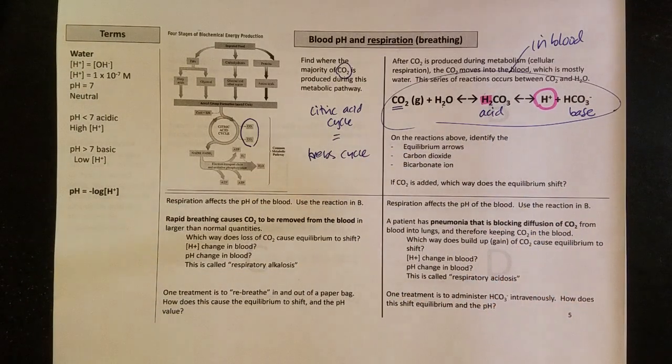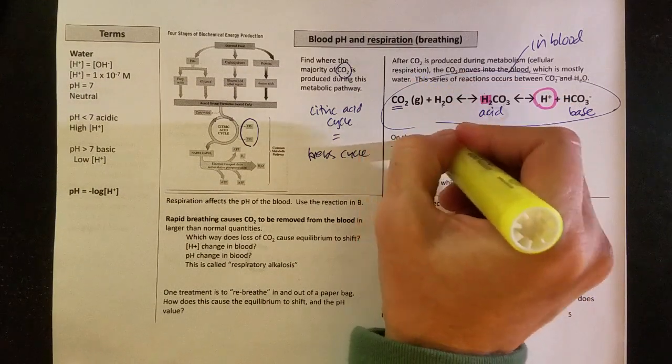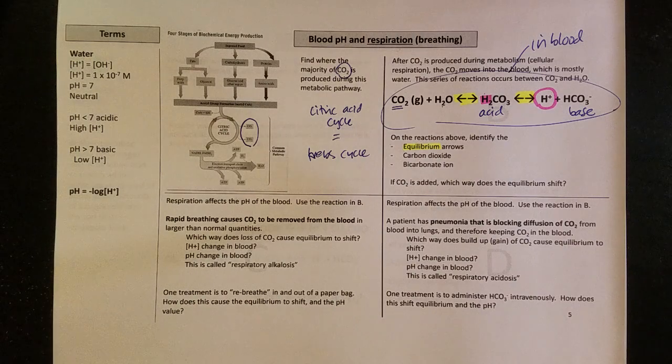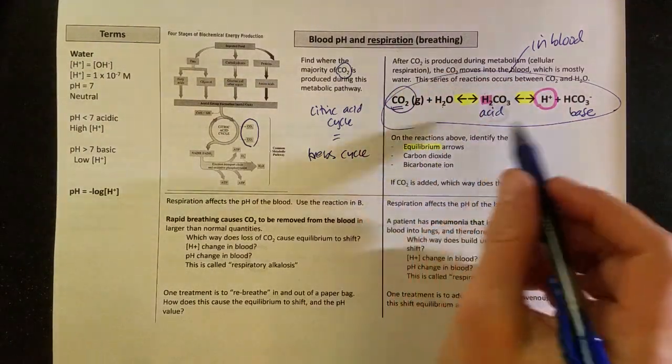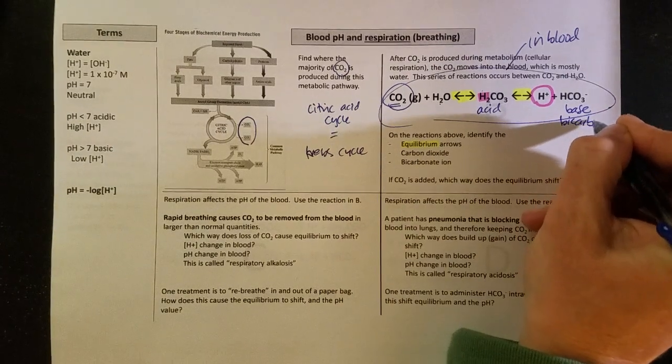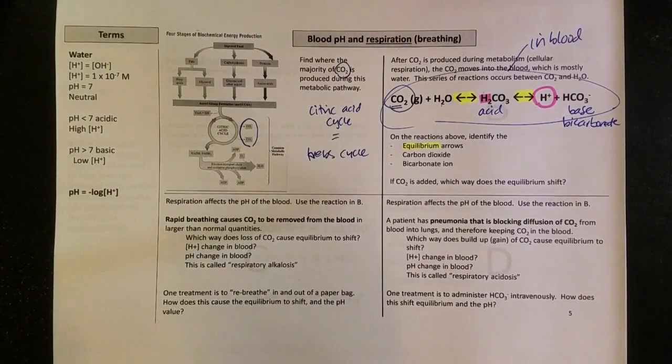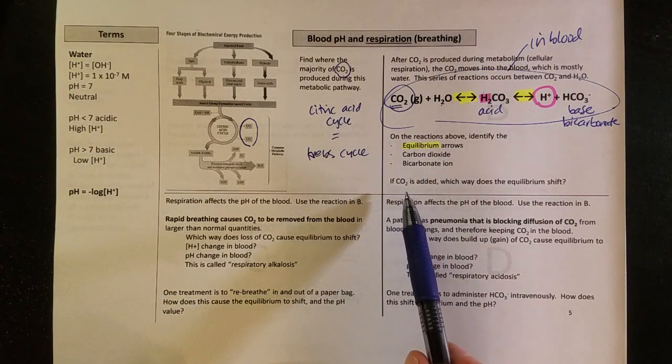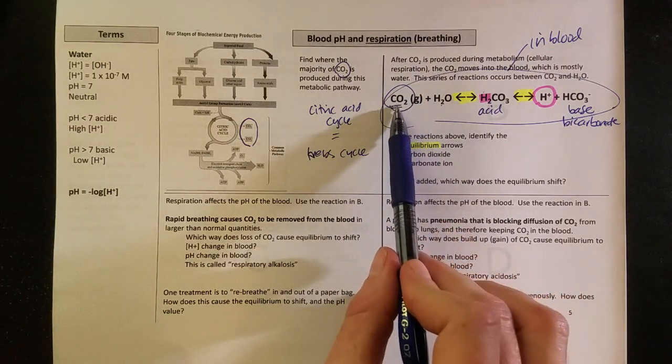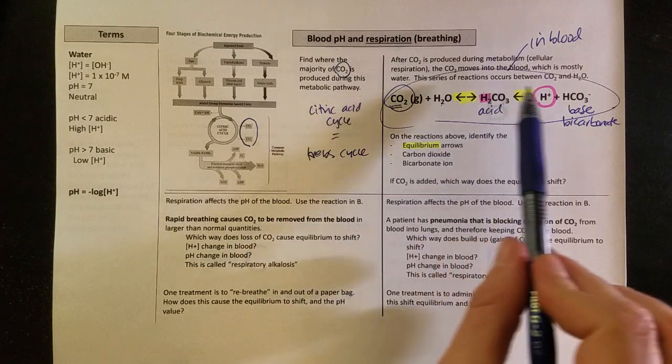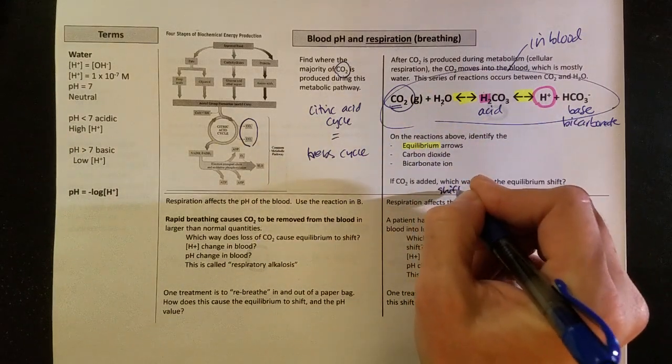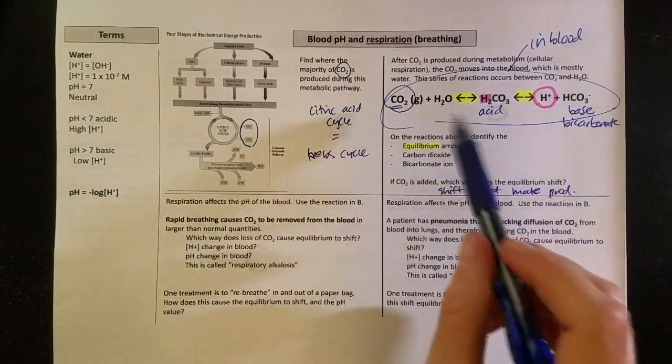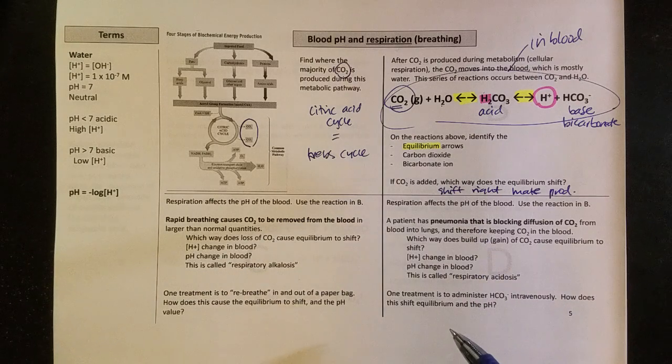So as I look at the reaction above, equilibrium arrows, we're going to be using what we learned in chapter five about equilibrium. We'll talk about shifting. We can see the carbon dioxide and the bicarbonate is over here. That's the same bicarbonate that you would find in sodium bicarbonate, which is baking soda at home in your kitchen. If carbon dioxide is added, my equilibrium will shift to the right. So it will make more products. That's going to be important for me to make that connection when I look at some of these applications.